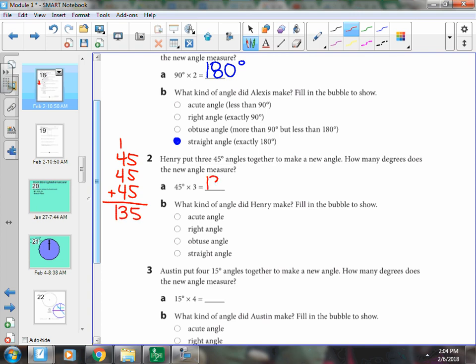135 degrees. If it's more than 90 and less than 180, it is an obtuse angle.